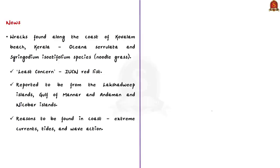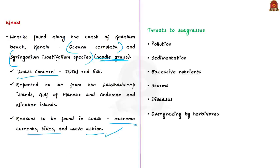The two seagrasses mentioned in the news article are Oceana serulata and Syringodium isoetifolium, the latter also called noodle grass. Both species are listed as Least Concerned in the IUCN Red List and are reported from Lakshadweep Islands, Gulf of Mannar, and the Andaman and Nicobar Islands. These seagrasses found on the Kerala coast may have arrived due to extreme currents, tides, and wave action. Other threats to seagrasses include pollution, sedimentation, excessive nutrients, storms, disease, and overgrazing by herbivores.